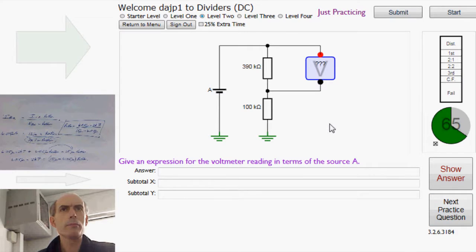R. Now that's fairly straightforward, actually. The current down through this potential divider is just going to be A divided by the total resistance, which is 490k. I can add up the 390 and the 100 in my head. And the voltmeter is going to be measuring the voltage across a 390k resistor. This is the current flowing through the resistor.